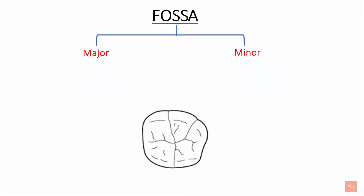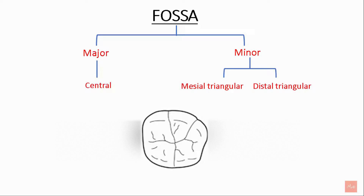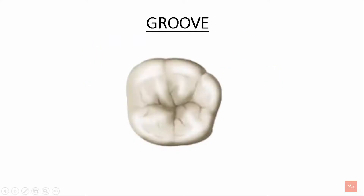Let's see the fossa. There is one major fossa, the central fossa, and two minor fossae: the mesial triangular fossa and the distal triangular fossa. The fossa present in the center is known as the central fossa; this is the distal fossa and this is the mesial fossa.